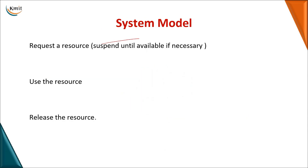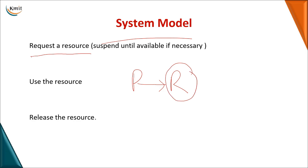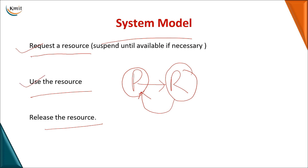In the system model for deadlock, when you have a process and a resource, you follow a strategy: first, a process requests a resource. If the resource is available, it is immediately given to that process; otherwise the process waits until the resource is available. Once the resource is available, the process can use it and then release it. So the model is: request, use, and release the resource.